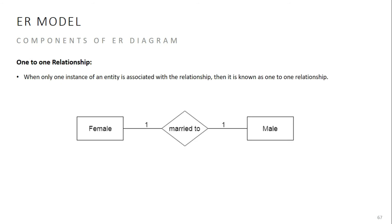The first type is the one-to-one relationship, where one entity is connected to exactly one other entity. For example, one female can marry only one male — this is a one-to-one relationship. Another example: one person can have only one citizenship, and one person can have only one passport — these are also one-to-one relationships.